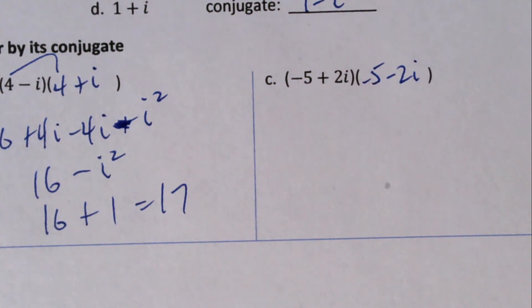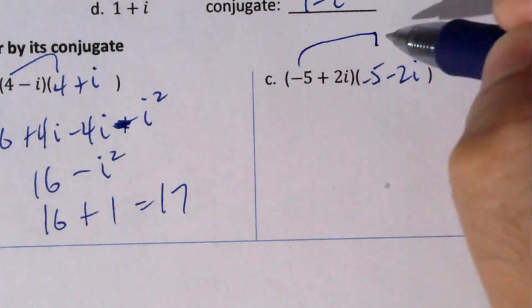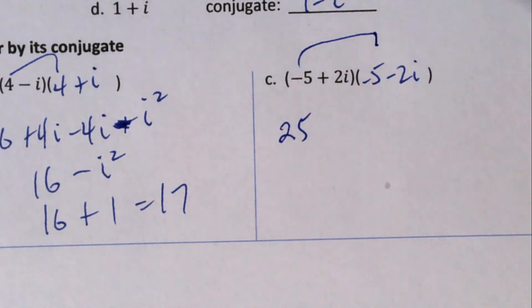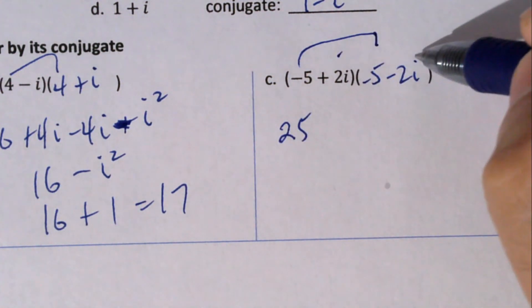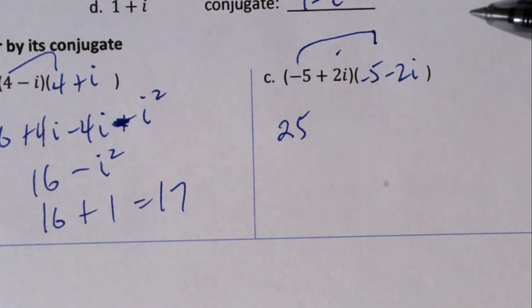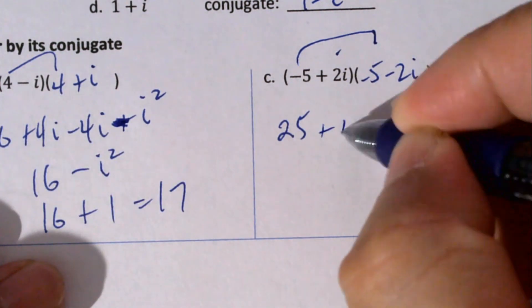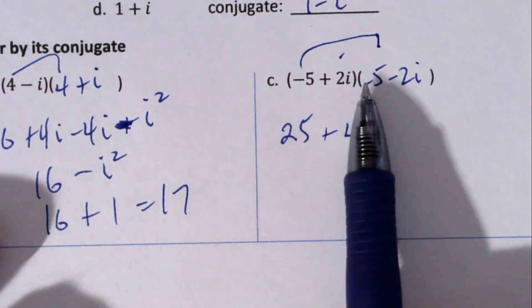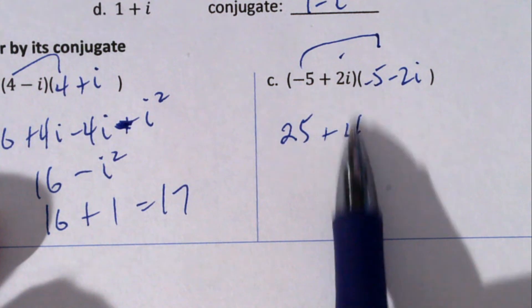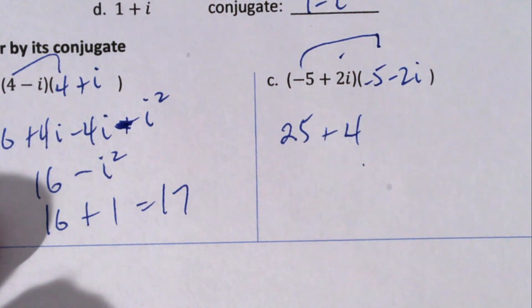-5 times -5, positive 25. Positive 2i times -2i is going to be - sorry, minus 4i², but remember what the i² does: it turns into a plus. It's +4, so you can just do square the first term plus square the second term. Forget the i, just make it a plus, so you get 29. See, this will work.